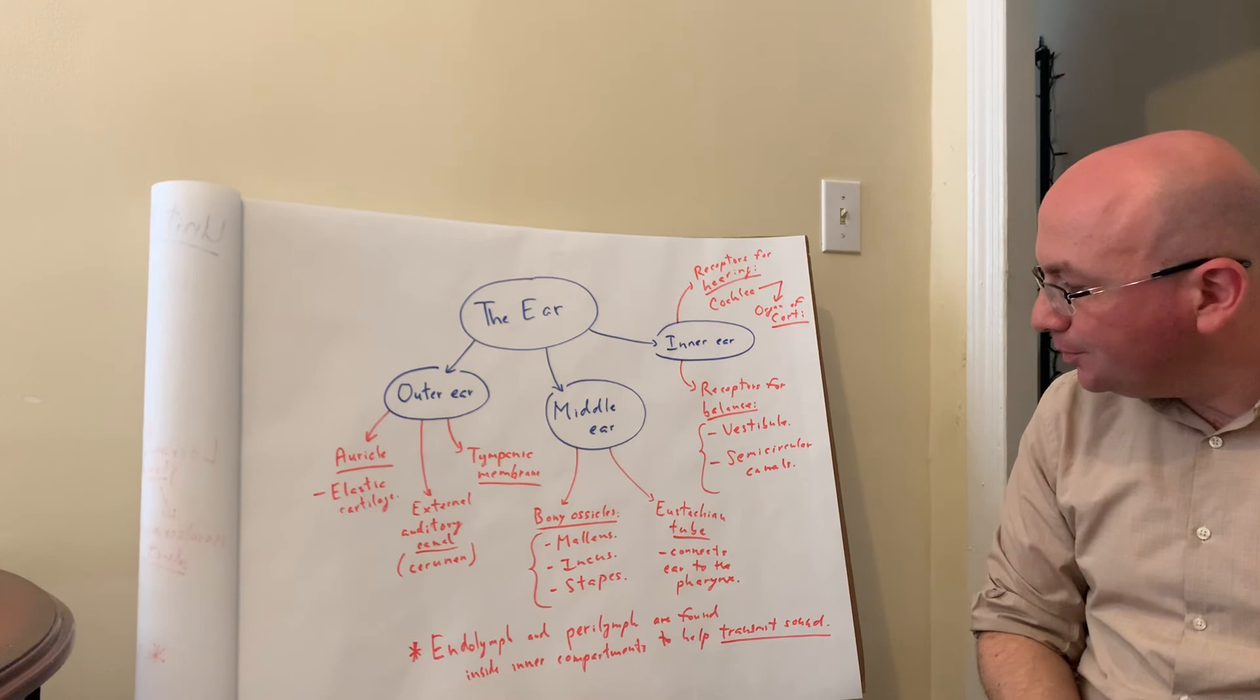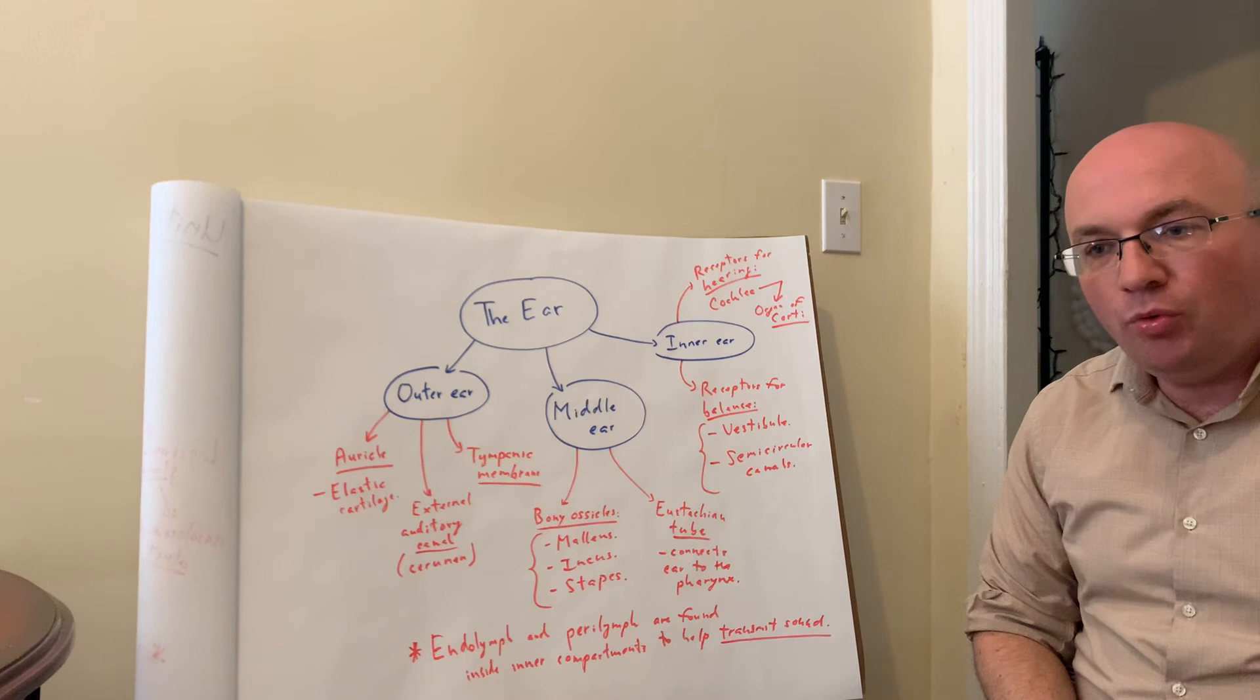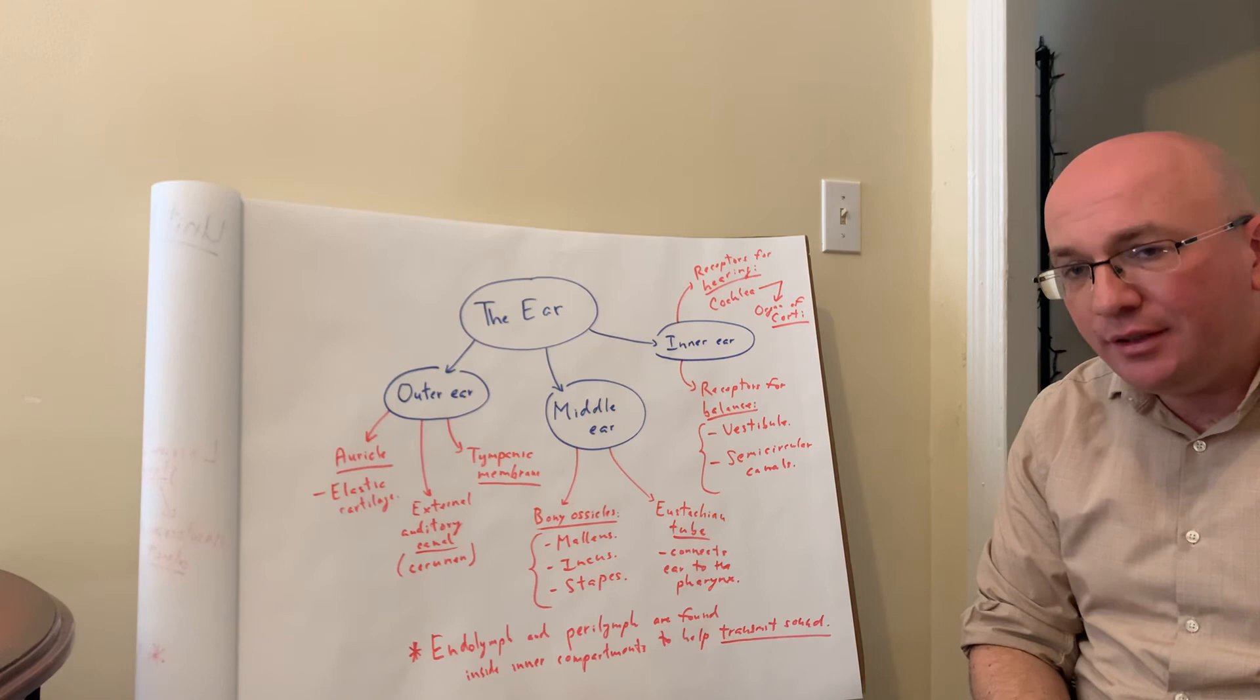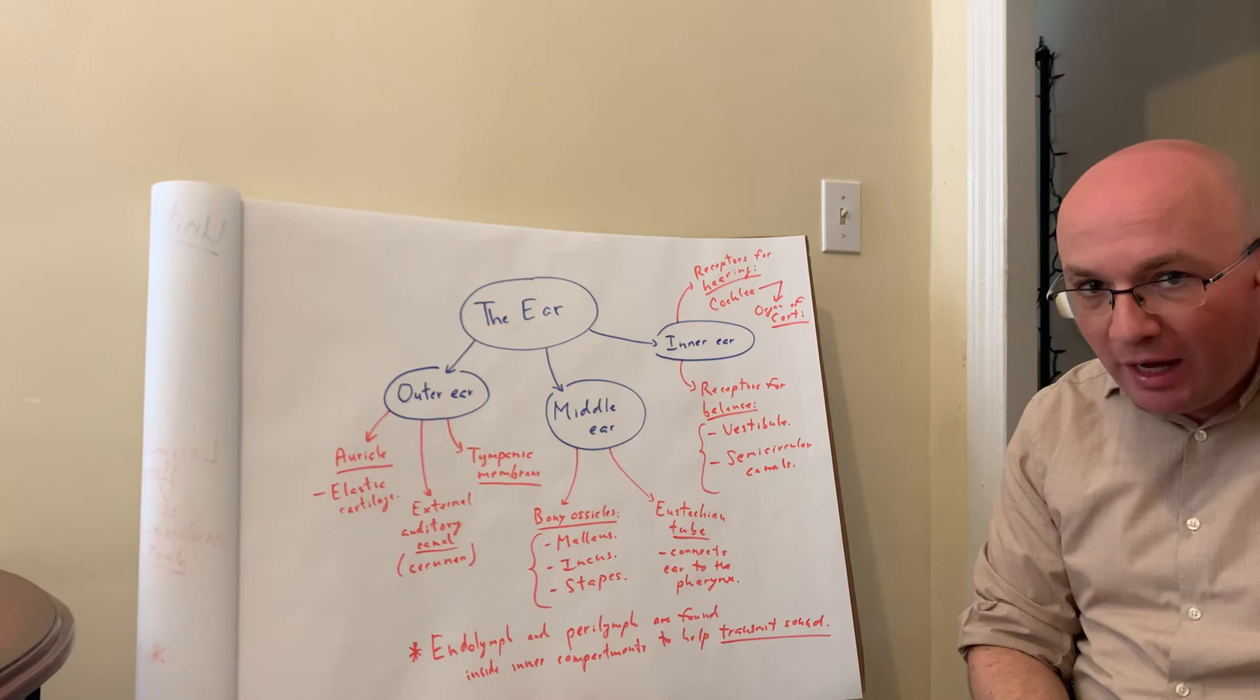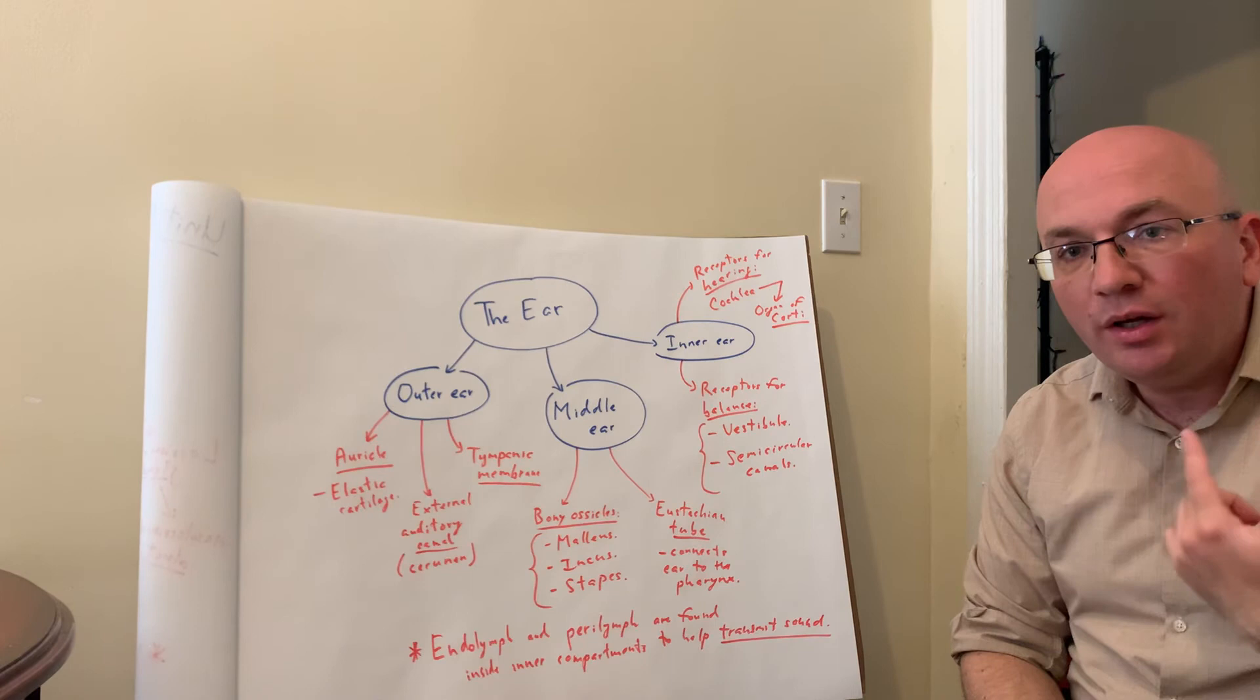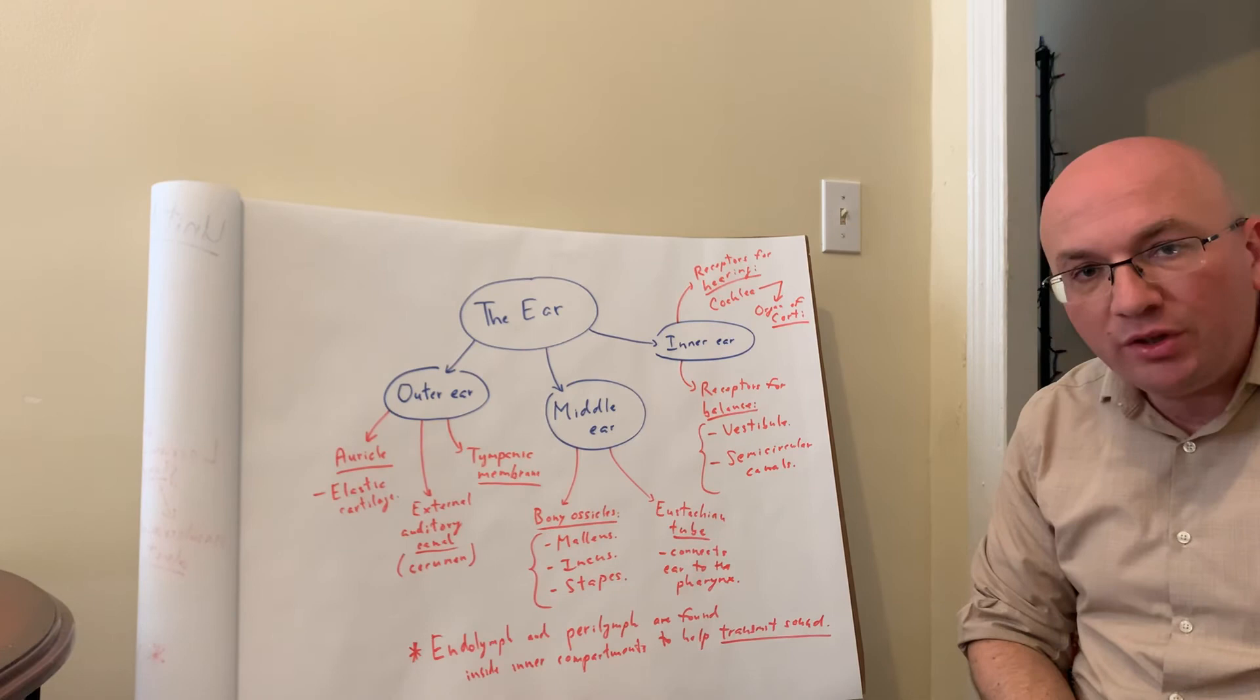Keep in mind, in kids, the Eustachian tubes are more directly connected. They're more straight, and that's often why kids have more ear infections. The ear infections in children do not occur because the bacteria or viruses enter through the outside of the ear. They actually occur because the microbes enter through the pharyngeal area, through the pharynx, traveling through the Eustachian tube, like through a tunnel towards the middle ear.